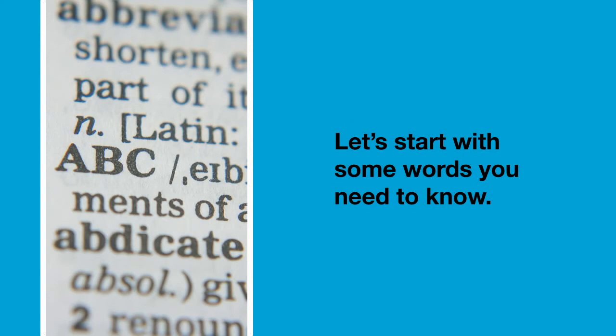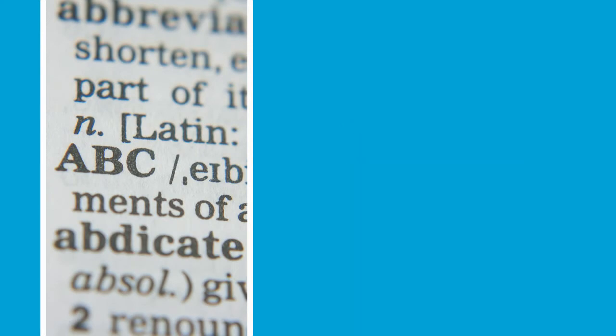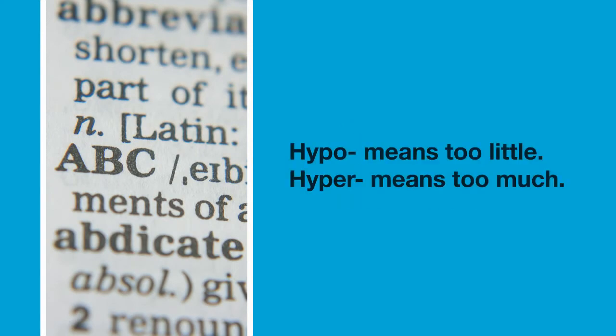Let's start with some words that you need to know. Hypo means too little of something and hyper means too much. In Greek, hypo is low and hyper is high.